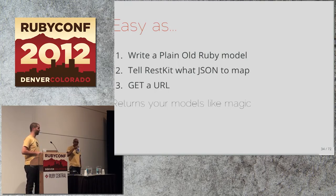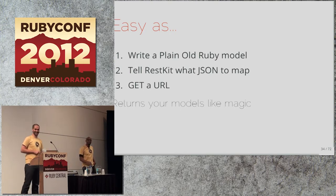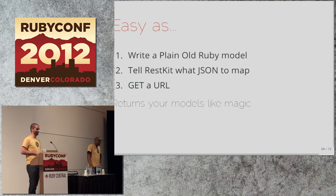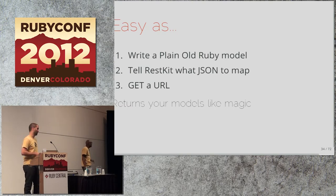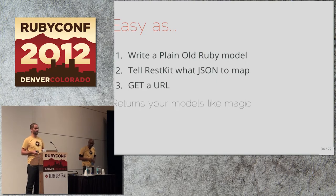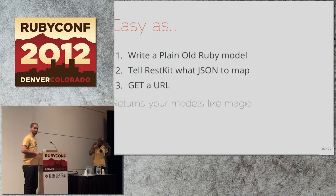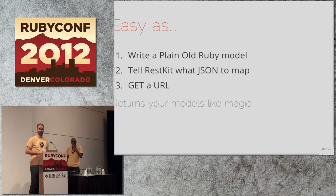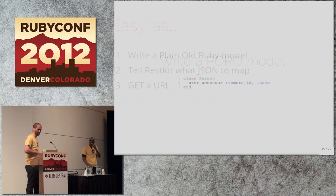The basic idea of RestKit: you write a plain old Ruby object, tell RestKit what JSON to map and how, hit a URL, and like magic RestKit returns your plain Ruby objects. Unlike ActiveRecord, you don't have to make your models know about a persistence framework — they stay clean.